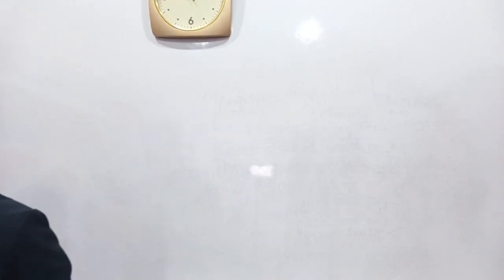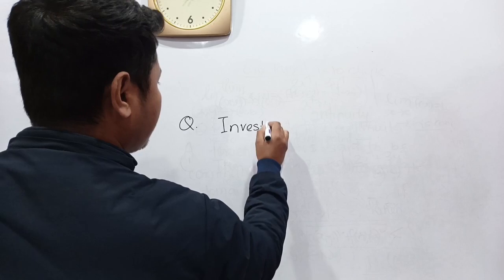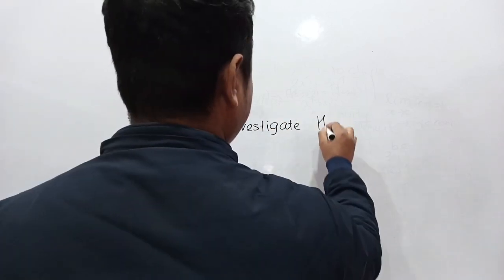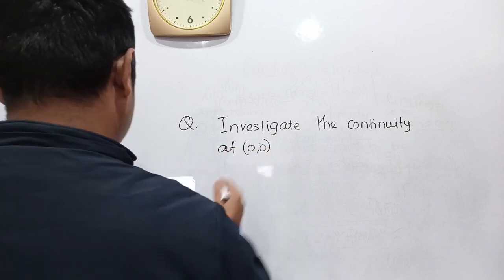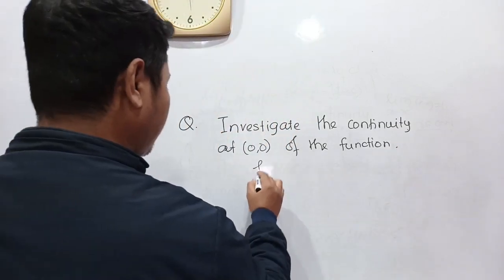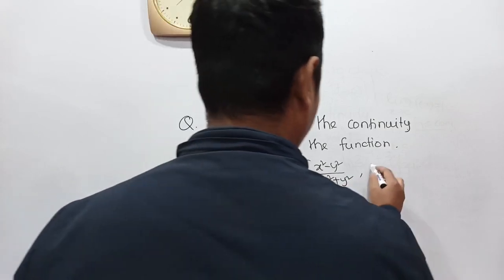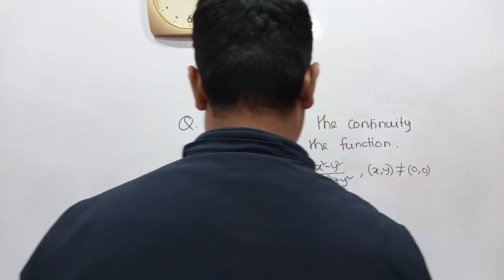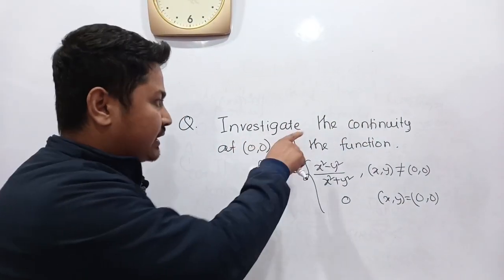Moving to the next question — Problem 2: Investigate the continuity at (0,0) of the function f(x,y) = (x² − y²)/(x² + y²) when (x,y) ≠ (0,0), and f(0,0) = 0.